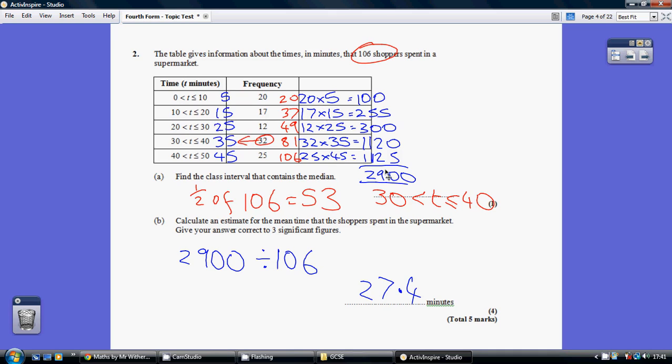So, we cross-multiply again. We add that up, giving us 2,900 minutes. That's how long 106 shoppers spent in the supermarket. So, 2,900 divided by 106 gives us 27.4 minutes.